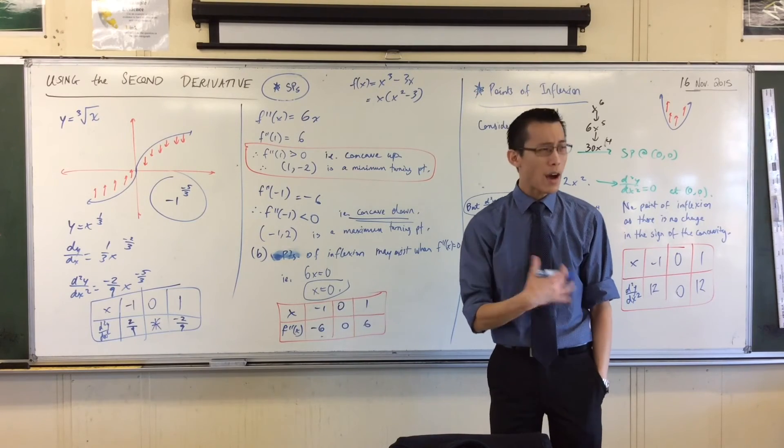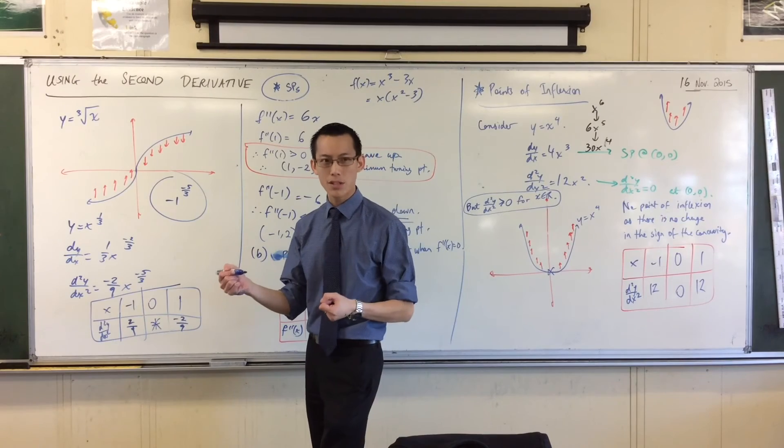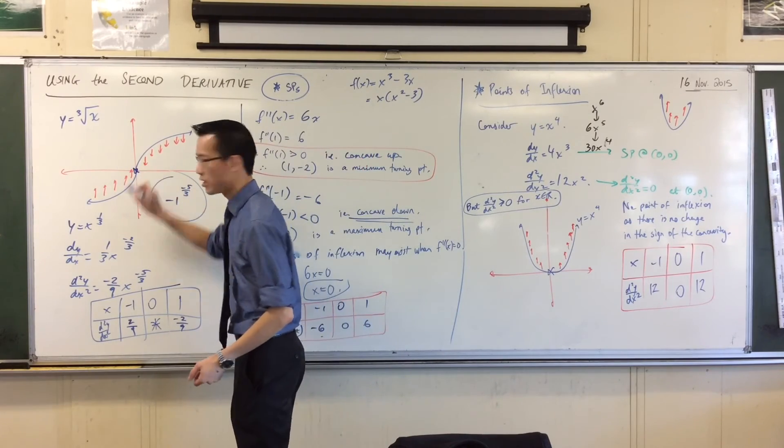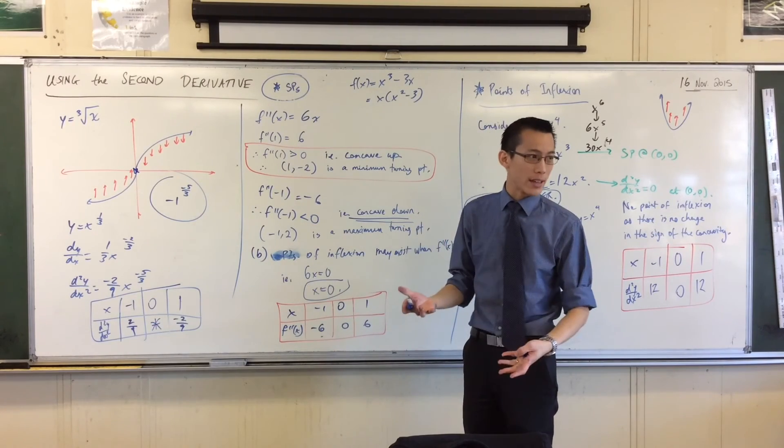One more thing that's worth mentioning. The reason why I have a point of inflection, I mentioned this before, is because there is a point, the function is continuous. The function is continuous. You can't have a point of inflection where you don't have a point.